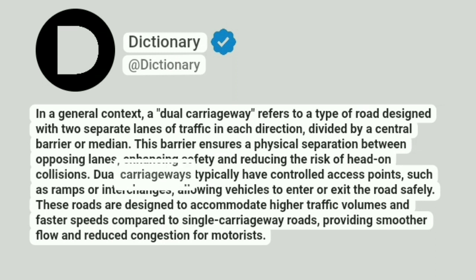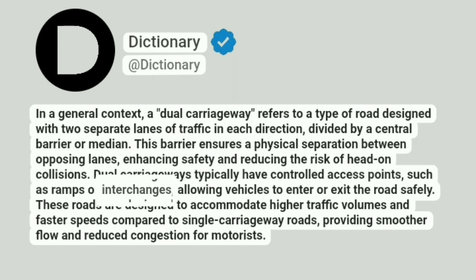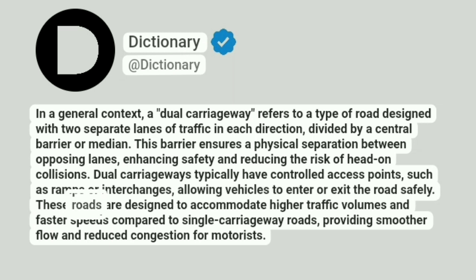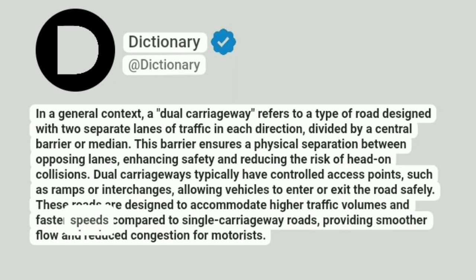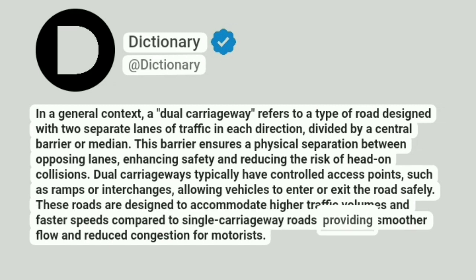Dual carriageways typically have controlled access points, such as ramps or interchanges, allowing vehicles to enter or exit the road safely. These roads are designed to accommodate higher traffic volumes and faster speeds compared to single carriageway roads, providing smoother flow and reduced congestion for motorists.